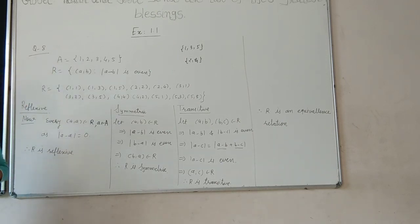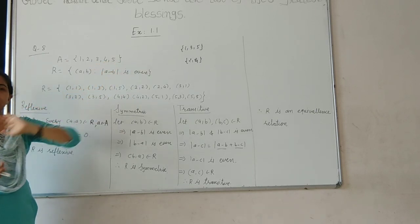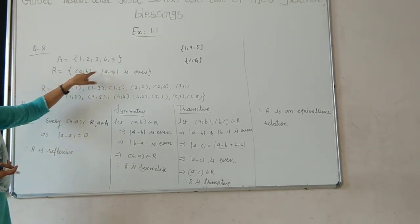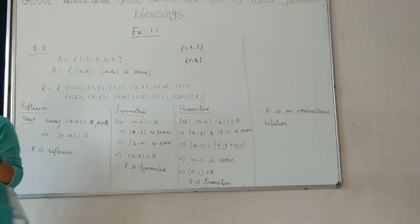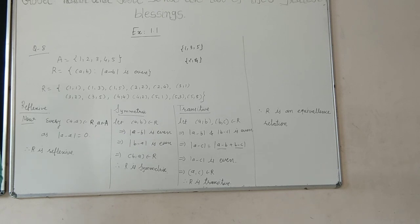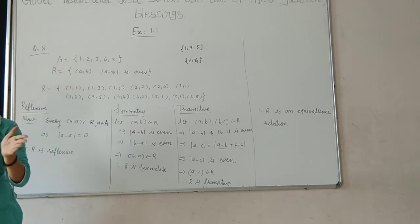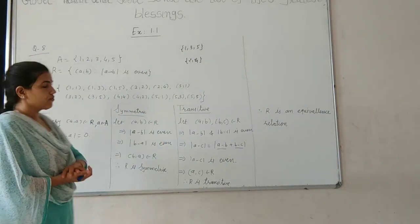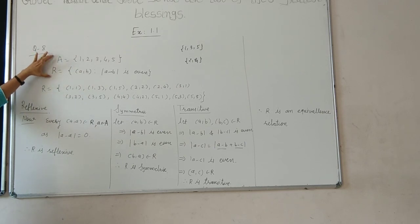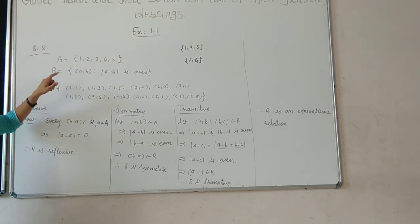Let me see the next question. The set A equals {1, 2, 3, 4, 5} and the relation R is defined as {(a, b) | |a - b| is even}. The question number 8 says: show that the relation R in set A = {1, 2, 3, 4, 5}, given by R = {(a, b) where |a - b| is even}, is an equivalence relation. Also show that all elements of {1, 3, 5} are related to each other, all elements of {2, 4} are related to each other, but no element of {1, 3, 5} is related to any element of {2, 4}.